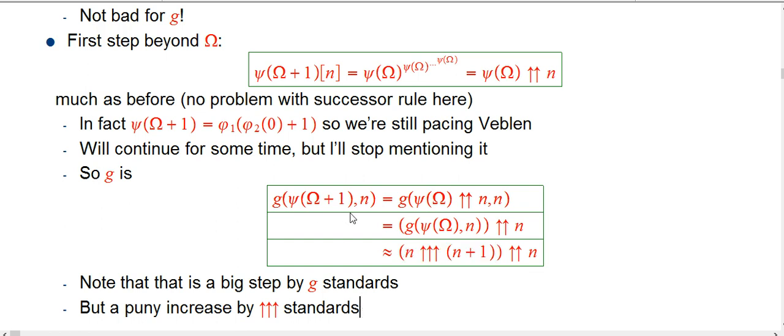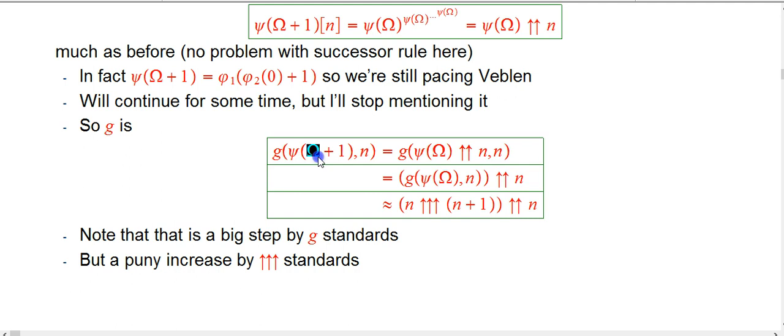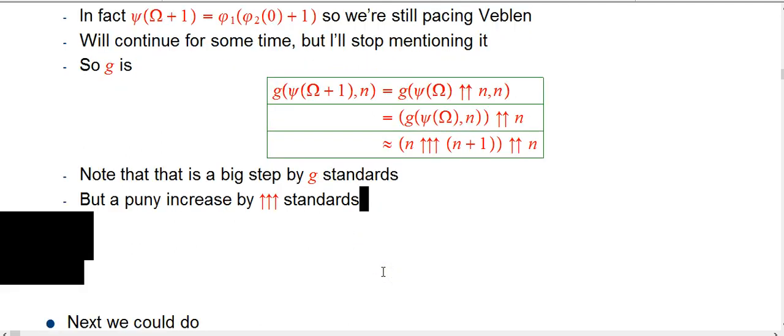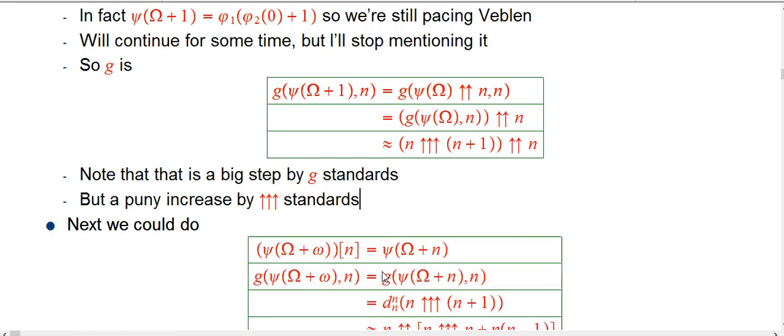By g standards, even an increase of plus 1 is something. And doing anything meaningful to g is a reflection of an enormous increase in f. So I don't want to diss it too much. But really by the triple up standards, it's not doing hardly anything. It's certainly a lot less than n triple up n plus 2, that's for sure. Underwhelming. But omega is a big placeholder and plus 1 isn't doing much compared to that. So it actually makes sense.